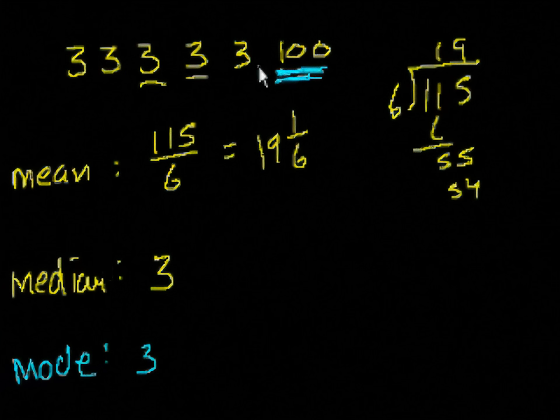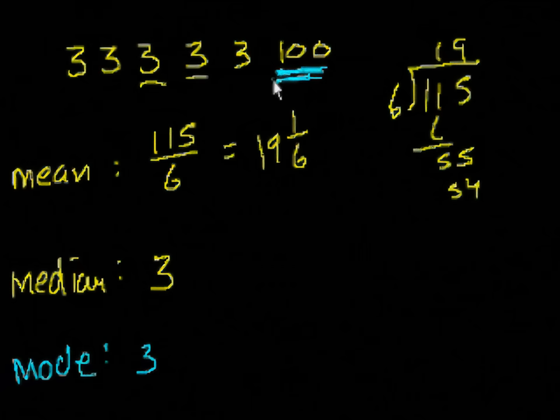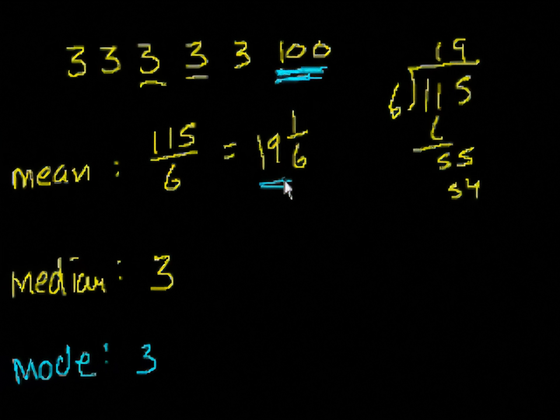But if this is something else, if this is scores on a test, maybe there is one kid in the class, one out of six kids who did really, really well and everyone else didn't study. And this is more indicative of how students at that level do on average. Anyway, I'm done talking about all of this. And I encourage you to play with a lot of numbers and deal with the concepts yourself.